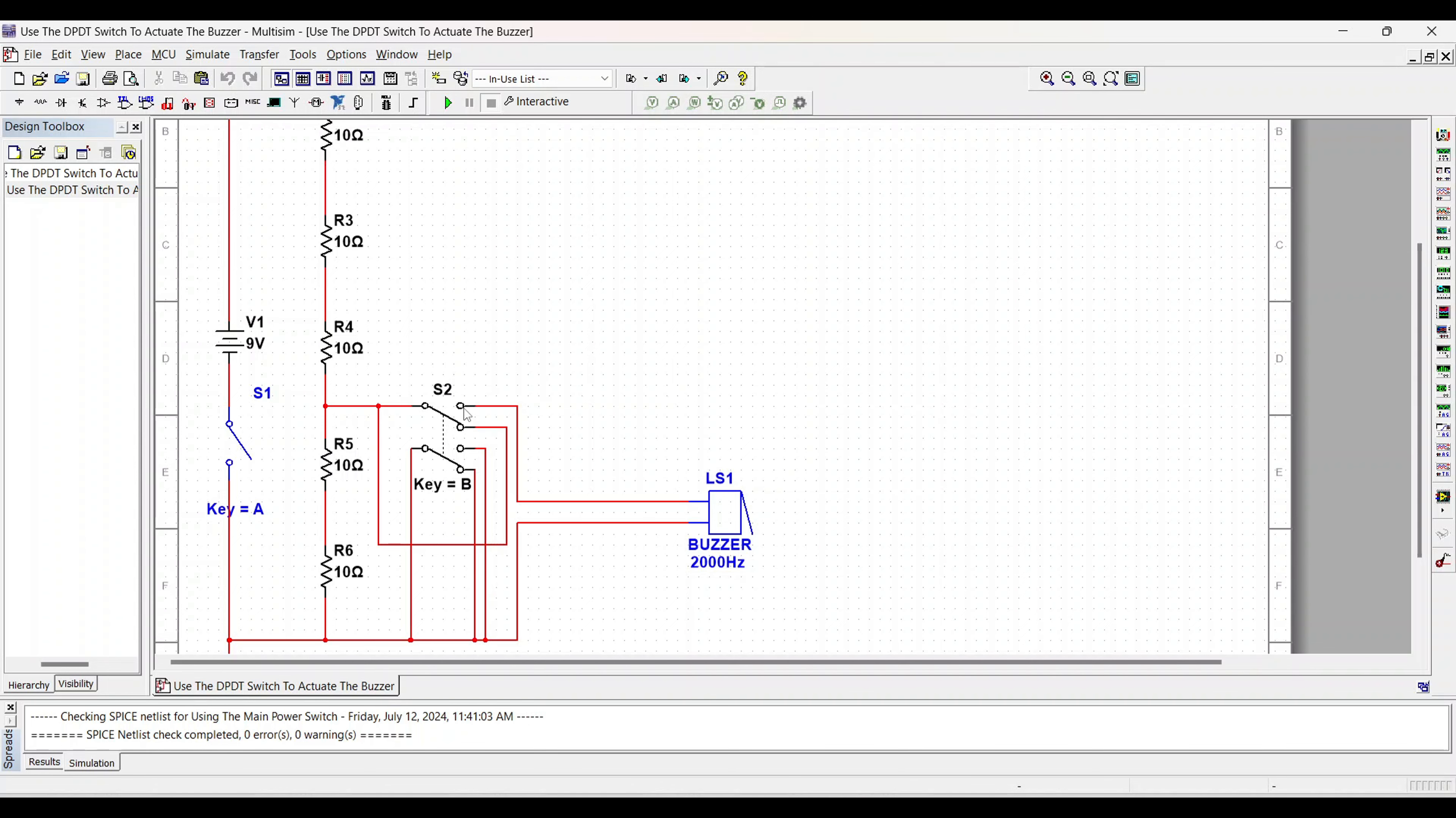So I have half of it just going straight to ground because we're not using it. And then if you see here, so this is our pull and these are the two throws. This first throw, when this is connected to it, then it will allow current to flow through the buzzer and circuit will be completed.